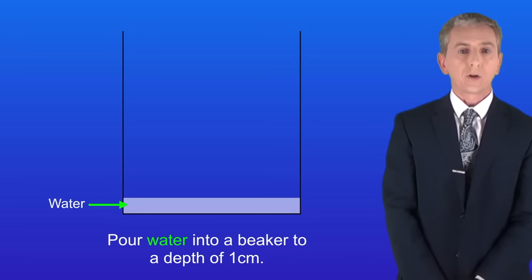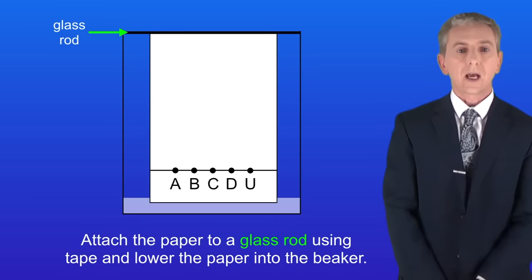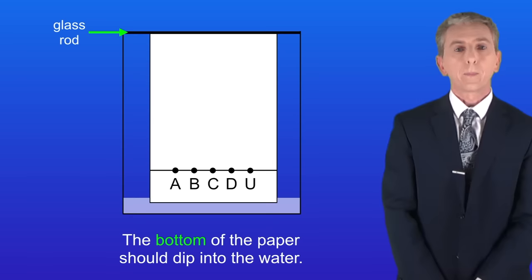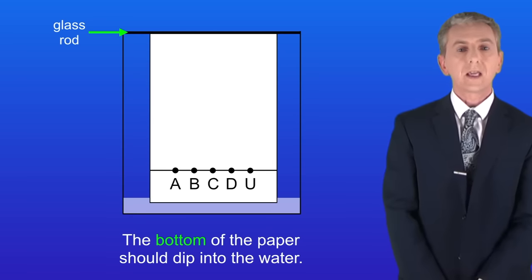Now we pour water into a beaker to a depth of one centimeter. Remember that in this case the water is the solvent. We now attach the paper to a glass rod using tape and we lower the paper into the beaker. The bottom of the paper should dip into the water.